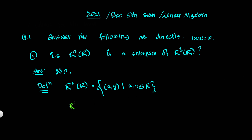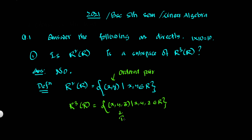R³ is the set of ordered triples, where (x, y, z) belongs to R. So this is the ordered pair for R² and the ordered triple for R³. This is the definition of R³.